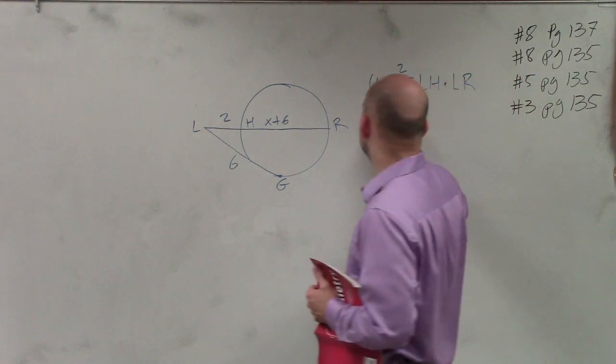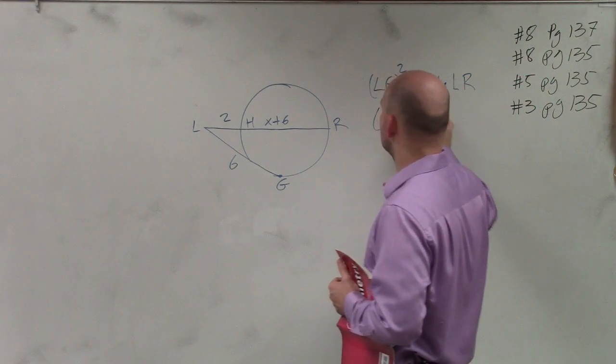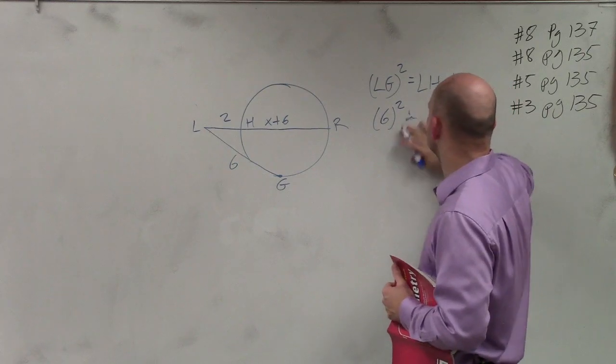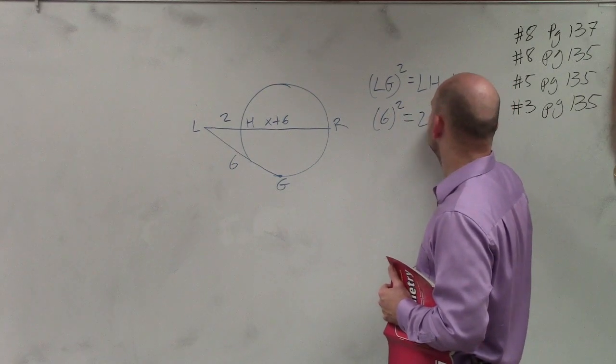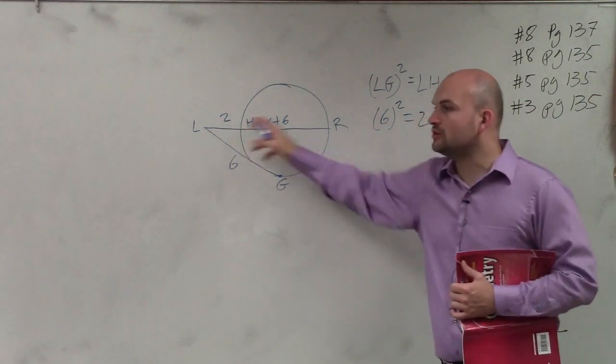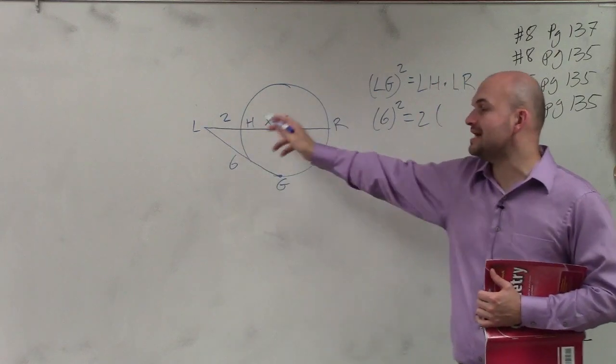So now let's just plug in the information we have. 6 squared plus lh, which is 2, times this whole length, which is going to be 2 plus x plus 6.